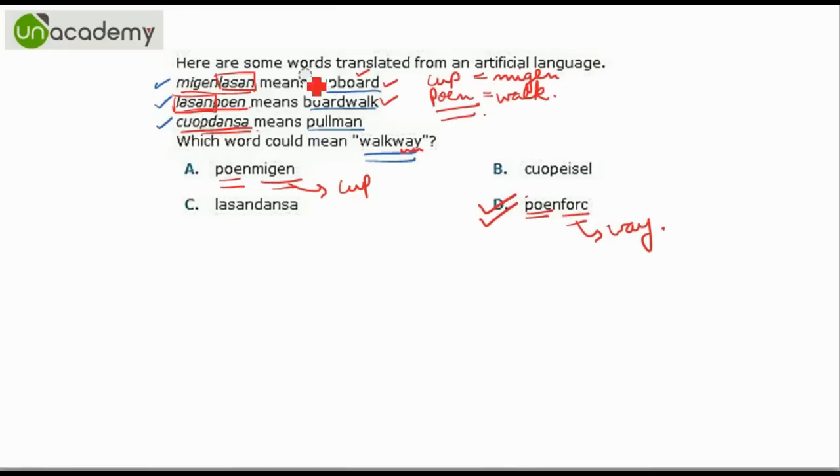So the correct option would be option D. So we find out the relation between these three and reduce the portion of words from the main words like board and cup and walk and then we try to find out this problem word translated into an artificial language. Let us see one more example.